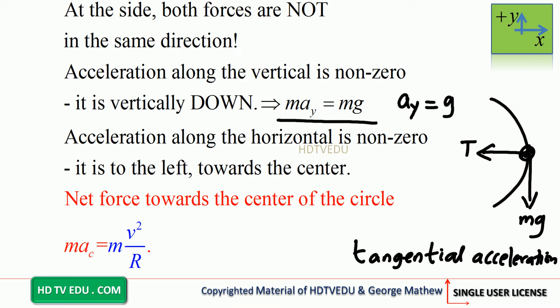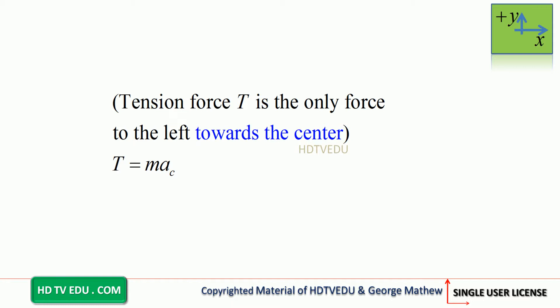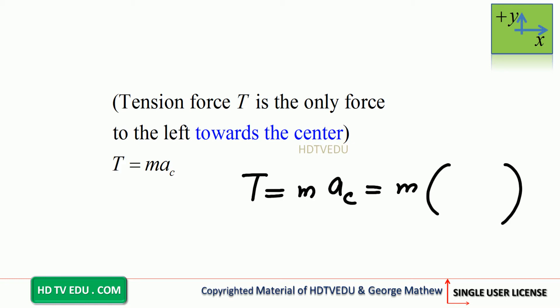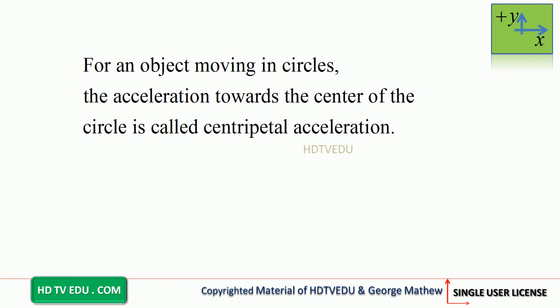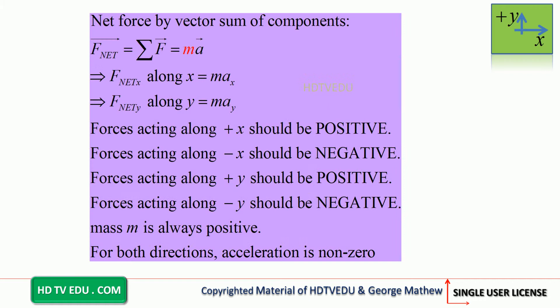Whenever an object moves in a circle, there is always a net force towards the center. T equals mv²/r. Tension force is the only force to the left towards the center, so T equals mass times acceleration towards the center, and acceleration towards the center is v squared divided by radius. Along the vertical, gravitational force is the only force acting vertically down. The equation of motion is mg equals m times acceleration along the vertical. For an object moving in circles, the acceleration towards the center is called centripetal acceleration.